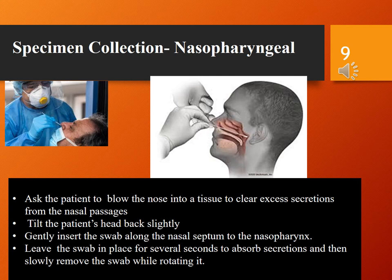Gently insert the swab along the nasal septum towards the nasopharynx until resistance is felt. The swab should reach a depth equal to the distance from the nostrils to the outer opening of the ear. Leave the swab in place for several seconds to absorb secretions and then slowly remove the swab while rotating it.